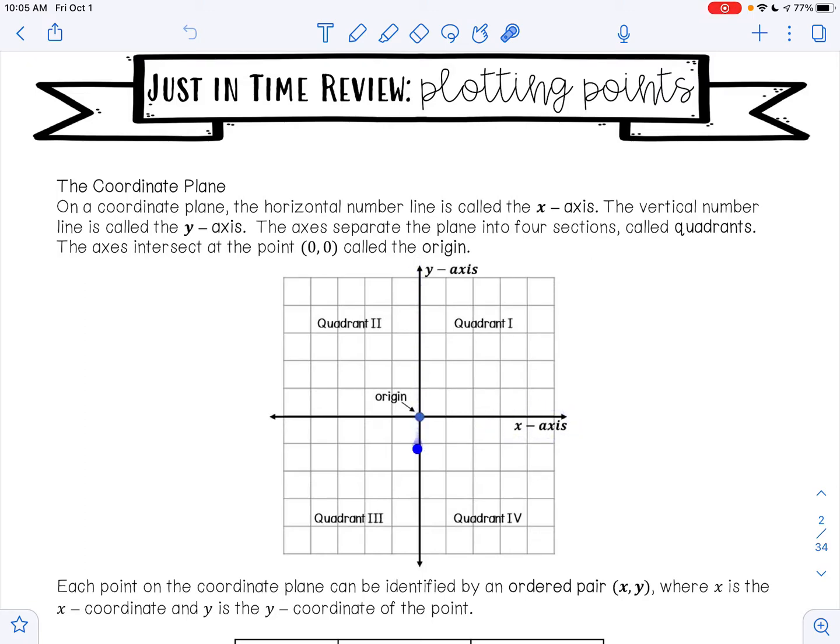The vertical number line, so this one right here, is called the y-axis. The axes separate the plane into four sections called quadrants. The axes intersect at the point (0, 0), which is called the origin.